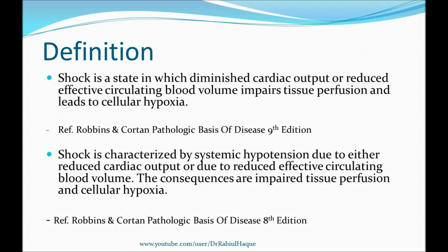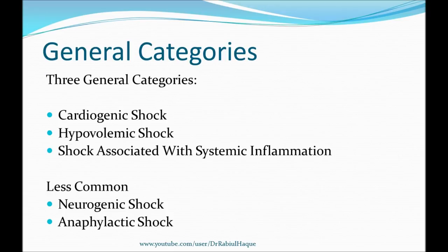Now that we have defined shock, we will move on and talk about the major types of shock. Always remember, there are three major types: cardiogenic shock, hypovolemic shock, and shock associated with systemic inflammation. In your textbook you will also see other types, such as neurogenic shock and anaphylactic shock, and we will talk about these one by one.